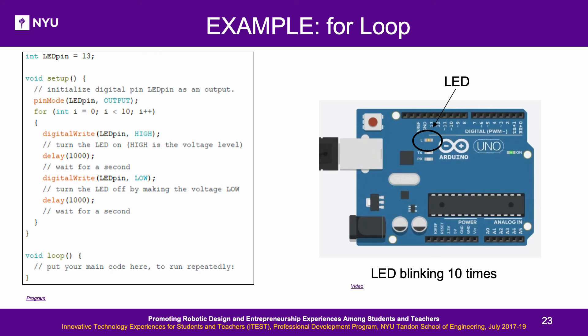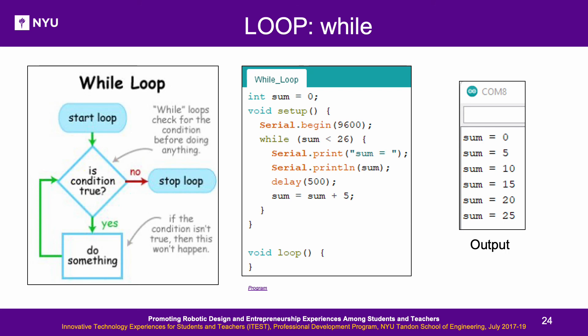Example For Loop / While Loop: One example shows code for blinking the internal LED of Arduino using a for loop. The while loop is also an entry-control loop like the for loop. In an example sketch, the while loop counts up to 25 in fives by adding 5 to a variable each iteration. If the sum is initialized to 26, the loop will not run even once because the test expression evaluates to false.